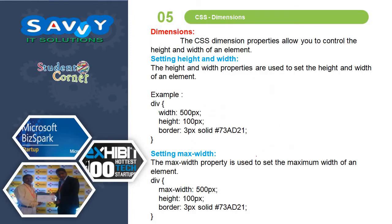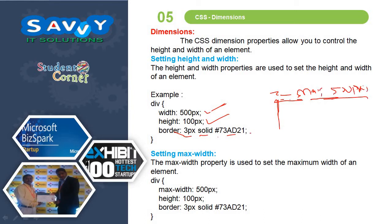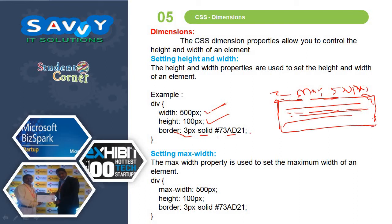The next topic is dimensions. The CSS dimension properties allow you to control the height and width of an element. The height and width properties are used to set the height and width of an element — for example, width 500px and height 100px, with a 3px solid border and some color defined. Setting maximum width means it is stretchable up to the text but a maximum of 500px. After it reaches 500px, the text will wrap to the next line. That is called maximum width. Height works the same way.